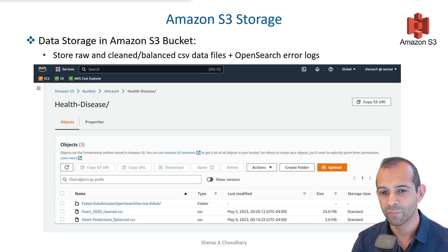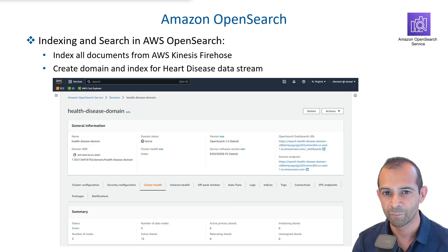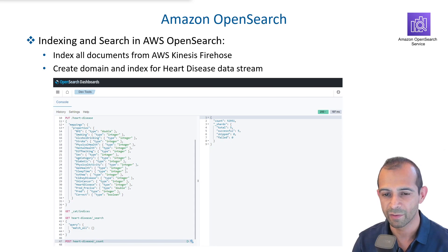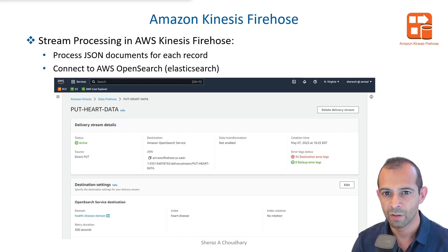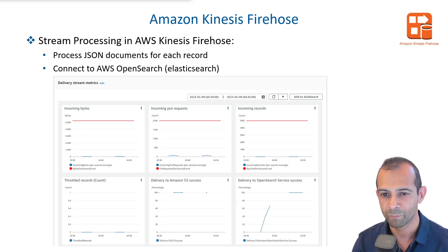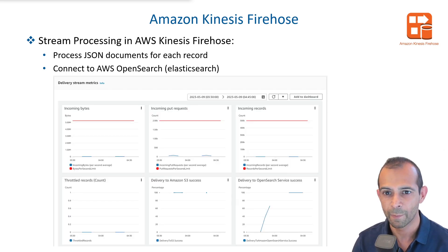This is the storage in S3 where the CSV file is. Indexing and search in AWS OpenSearch — you can see this index has all the fields that are in the dataset. Amazon Kinesis Firehose for transferring, and you can see the transfer rates here.